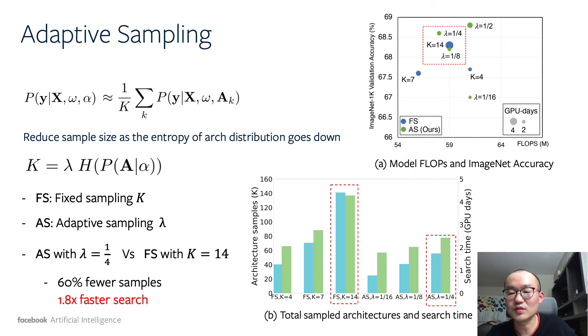However, as the optimization continues, the distribution becomes more spiky, and it is not necessary to sample as many as in the beginning of the search.